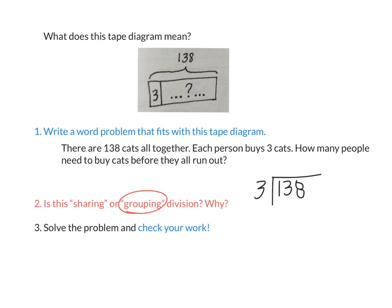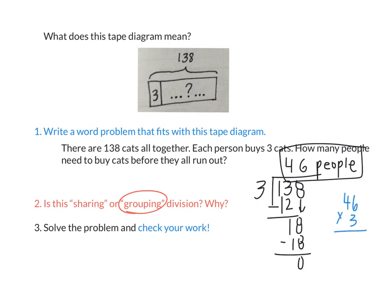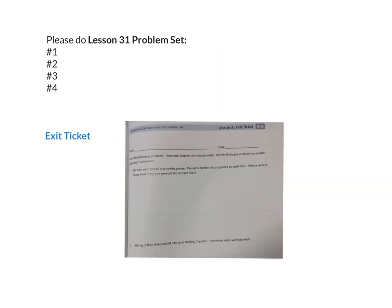Go ahead and check your work against mine as I divide on the board. So when I divided, I got 46 and because the question is asking how many people need to buy cats before they all run out, the answer is 46 people. How could I check my work using multiplication? What multiplication equation could I do? 46 times 3. Let's go ahead and do that. 3 times 6 is 18. 3 times 4 is 12 plus 1 is 13. 138. Was that my whole? Is that what I want? Yes, so good.